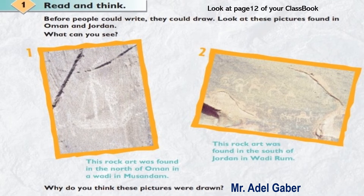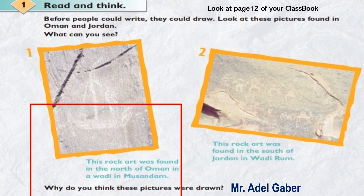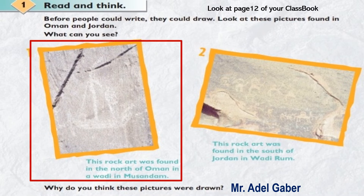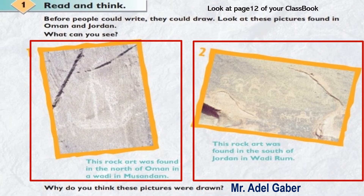Look at page 12 of your class book, Activity 1: Read and think. Before people could write, they could draw. Look at these pictures found in Oman and Jordan. What can you see in these pictures? Picture number one — this rock art was found in the north of Oman, in Awadi in Musandam. Look at picture number two — this rock art was found in the south of Jordan, in Wadi Rum.